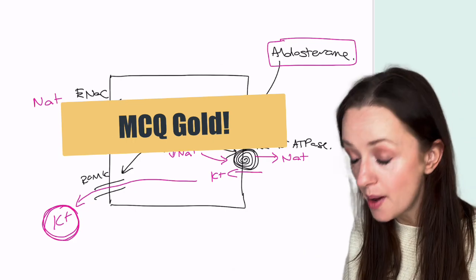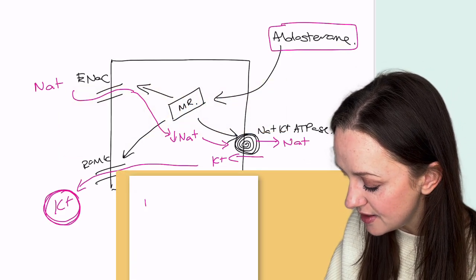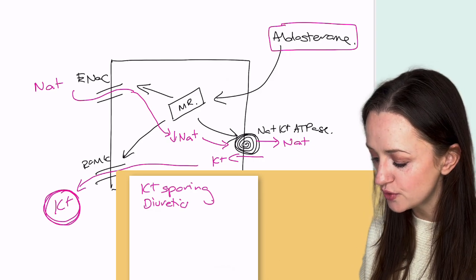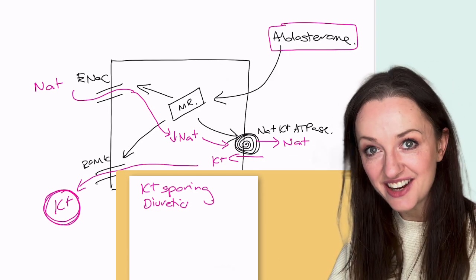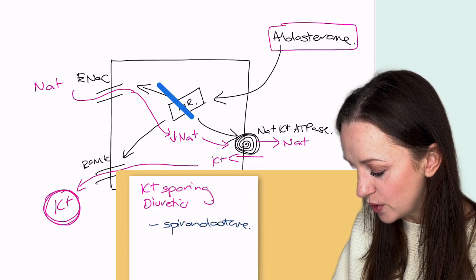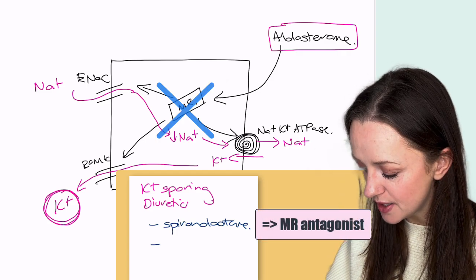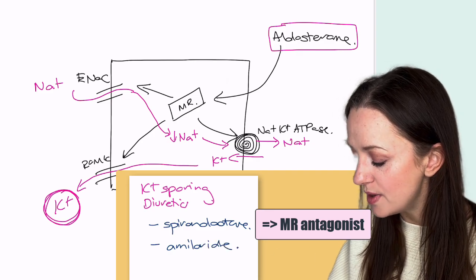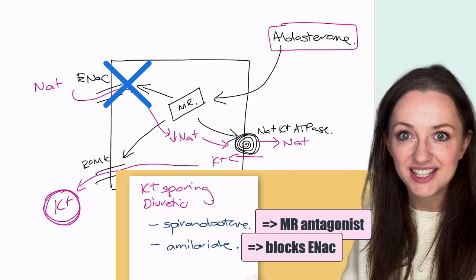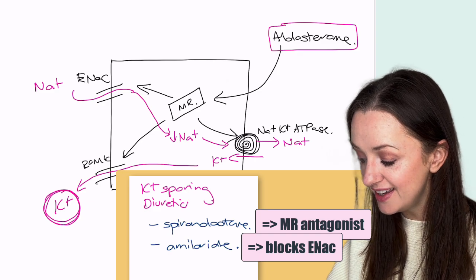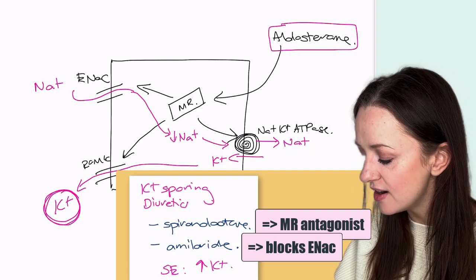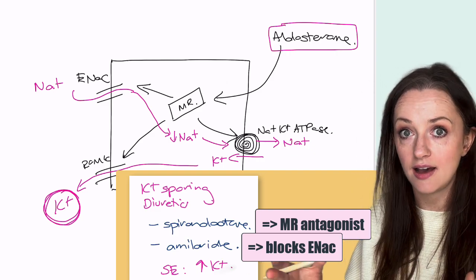If you have excessive amounts of aldosterone, you will lose more potassium and get hypokalemia. There are a few ways this can show up in your MCQs. It might come up as a question about potassium-sparing diuretics, because these block the effects of aldosterone. Can you name them? We have spironolactone, which blocks the mineralocorticoid receptor, and the other very common potassium-sparing diuretic is amiloride, which works by blocking the ENaC channel. The side effects of potassium-sparing diuretics would be high potassium — if you're blocking this whole rig, you're going to lose less potassium.